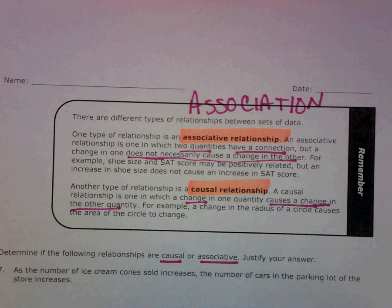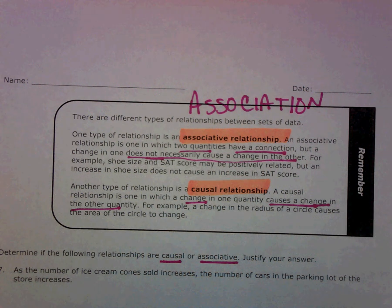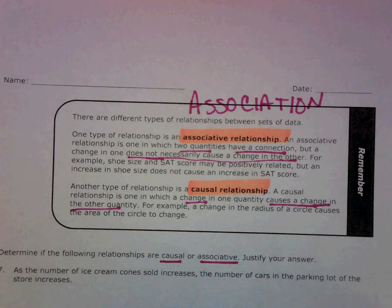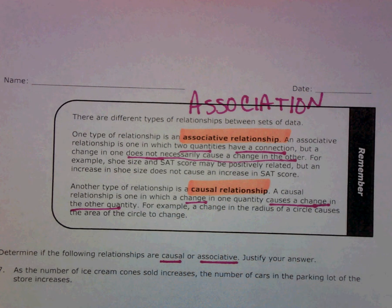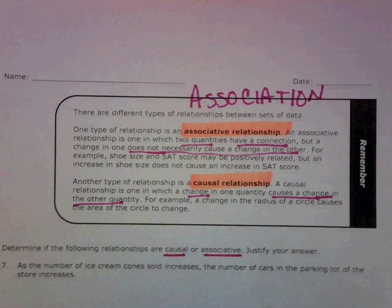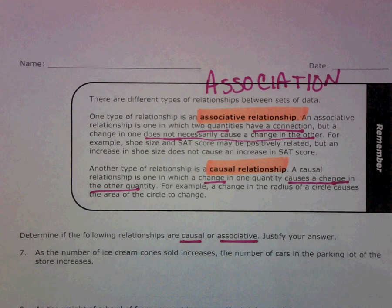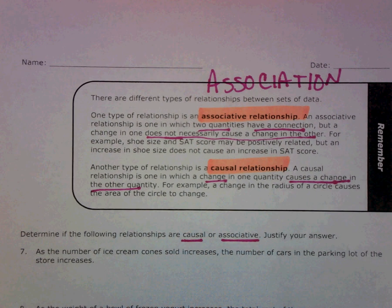Okay, so part two, because my phone was ringing and I got interrupted. So, association means that two things are associated, but they don't cause one or the other.